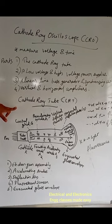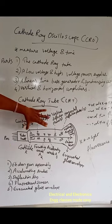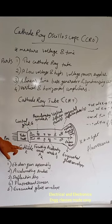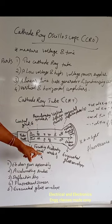The CRT consists of an electron gun assembly, accelerating anodes, a deflection system, a fluorescent screen, and an evacuated glass envelope. The electron gun assembly consists of a cathode, control grid, focusing anode, pre-accelerating anode, and accelerating anode.